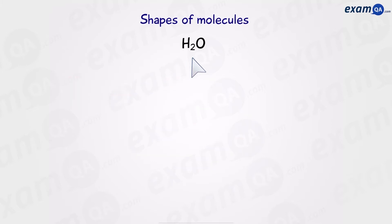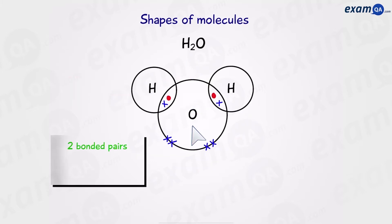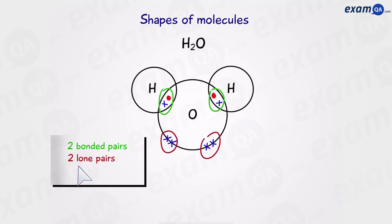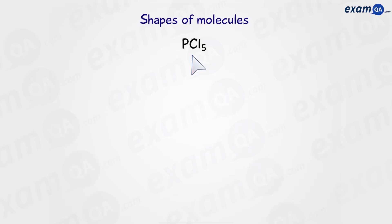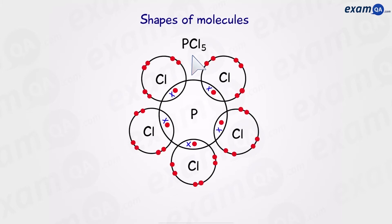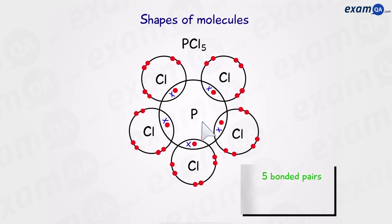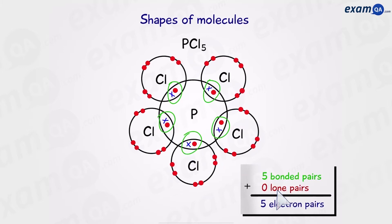With water, we have two bonded pairs around the central oxygen atom — one and two. But we also have two lone pairs, giving us four electron pairs in total. For phosphorus pentachloride, there are five bonded pairs — one, two, three, four, and five — and no lone pairs, so in total there are five electron pairs.